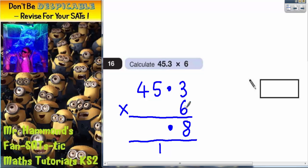6 times 5 is 30 plus that 1 is 31. Put your 1 in, carry the 3. 6 times 4 is 24 plus the 3 is 27. Put your 7 in.